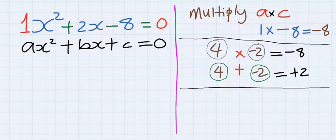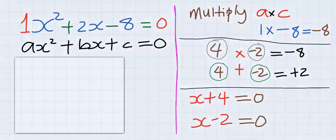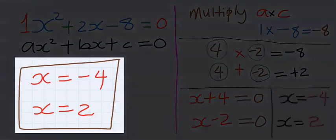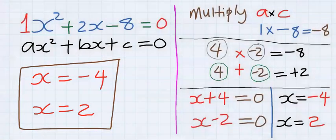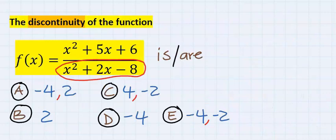Next, we are going to write it as x plus 4 equal to 0, and x minus 2 equal to 0. Hence, at x equal to minus 4 and x equal to 2, this function will cease to exist.